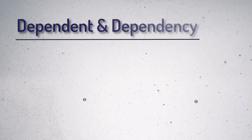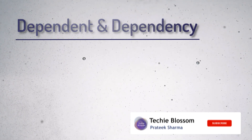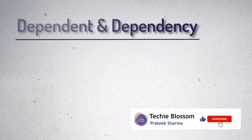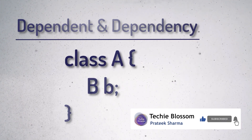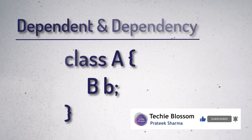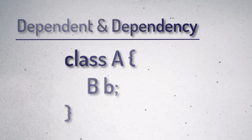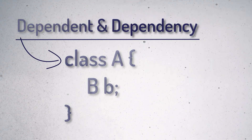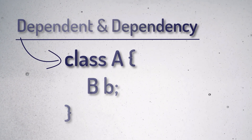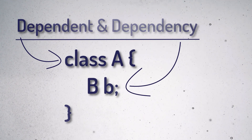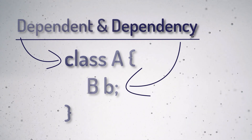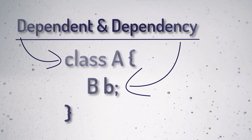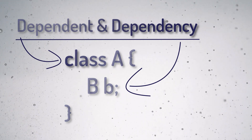Before we understand DI, let's see what is a dependency first. In very simple terms, when class A needs class B to perform its operations, then class A is dependent on class B, and class B acts as a dependency for class A.